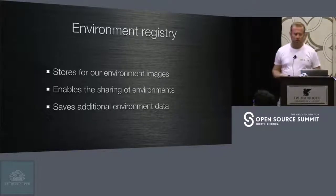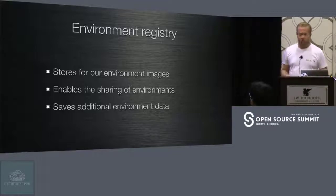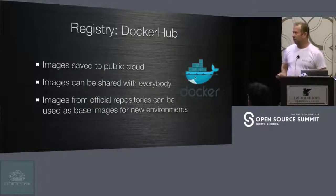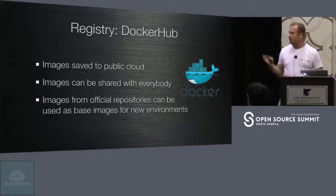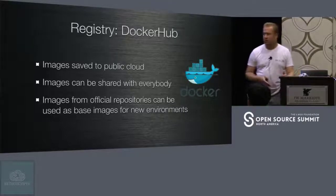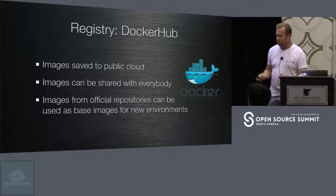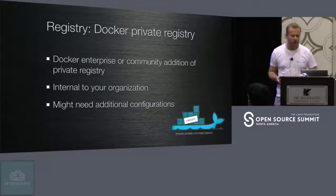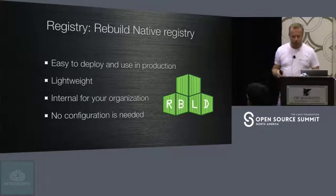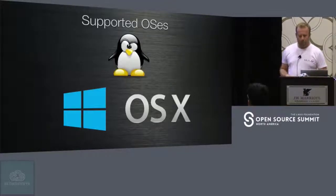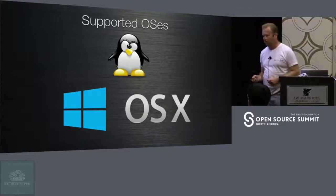The environment registry stores environments and enables sharing between team members. We support Docker Hub — which is public, great if you work on a project and want the development environment to be publicly shared. We also support Docker private registry for deploying locally within your organization, and the rebuild native registry if you don't want to deal too much with registry configuration. We support Linux, macOS, and Windows.